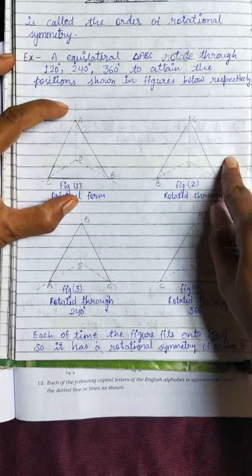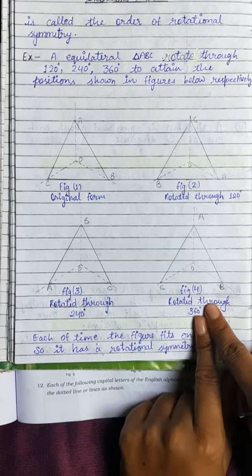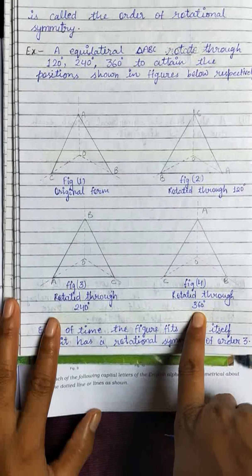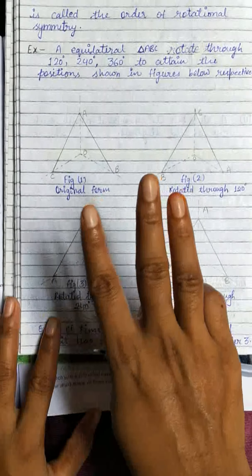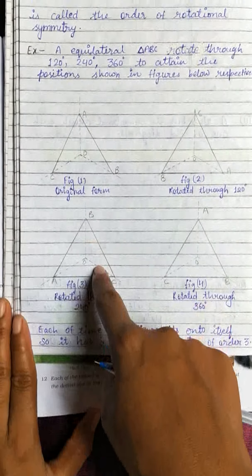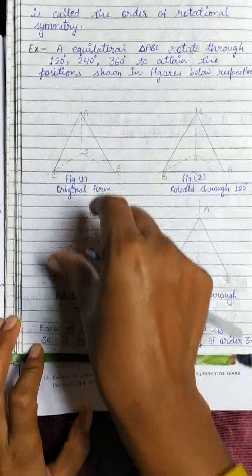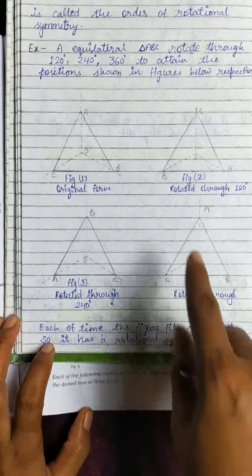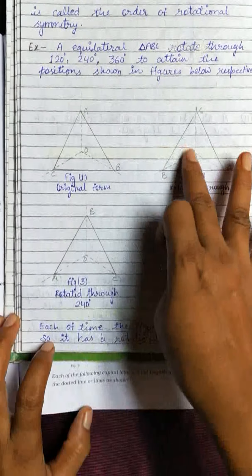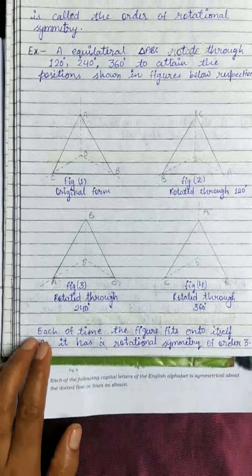The equilateral triangle fits onto itself 3 times in one complete rotation. The number of times a figure fits onto its original position is called the order of rotational symmetry. So the order of rotational symmetry of an equilateral triangle is 3. It has rotational symmetry of order 3. Now let's do the exercise questions.